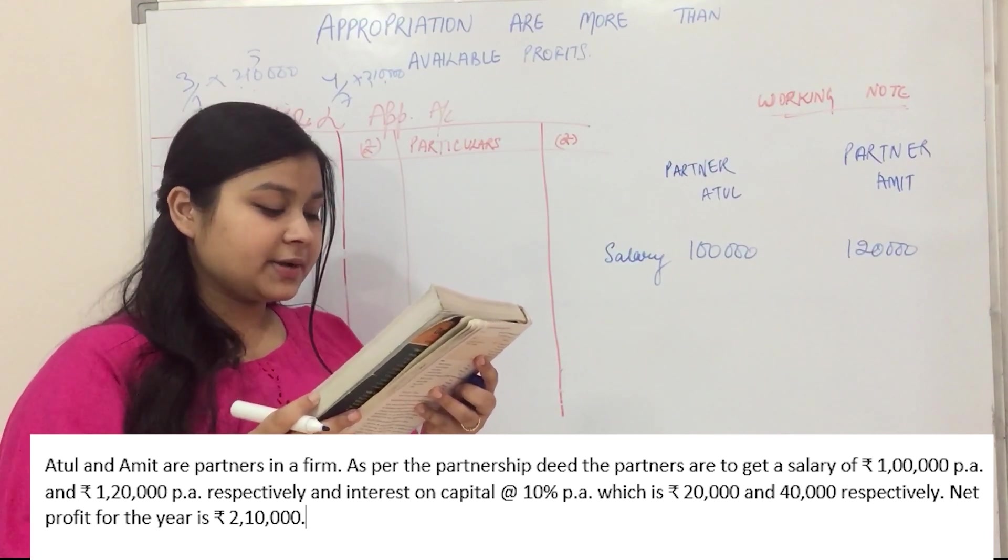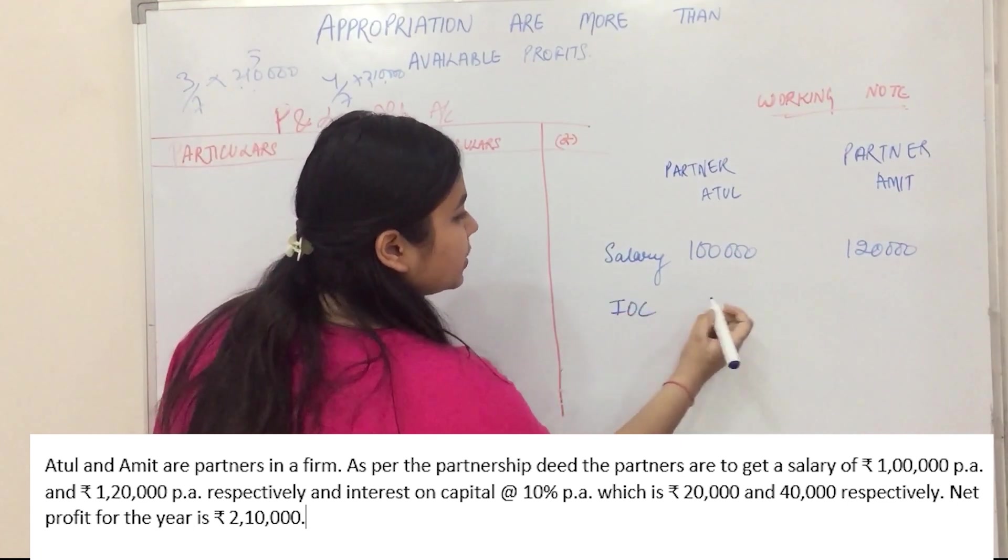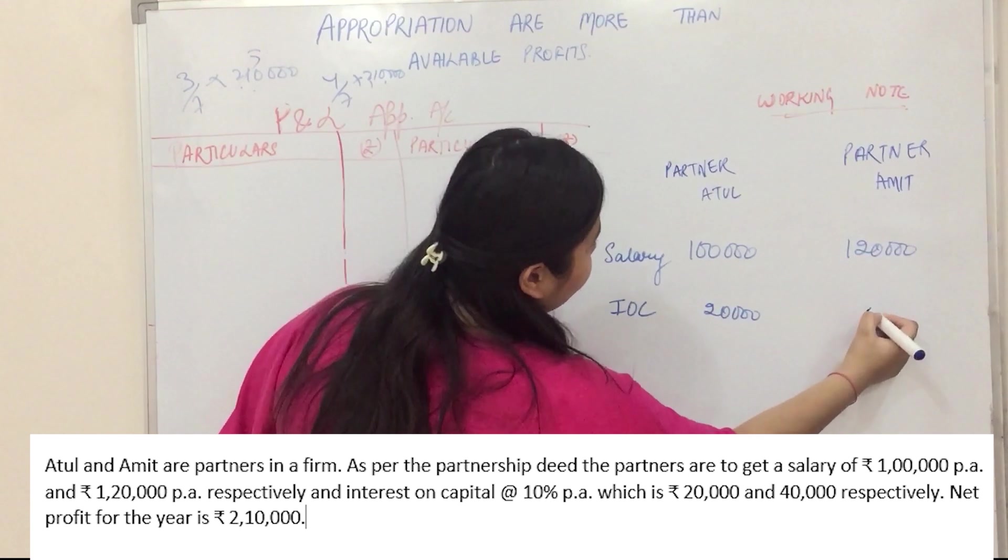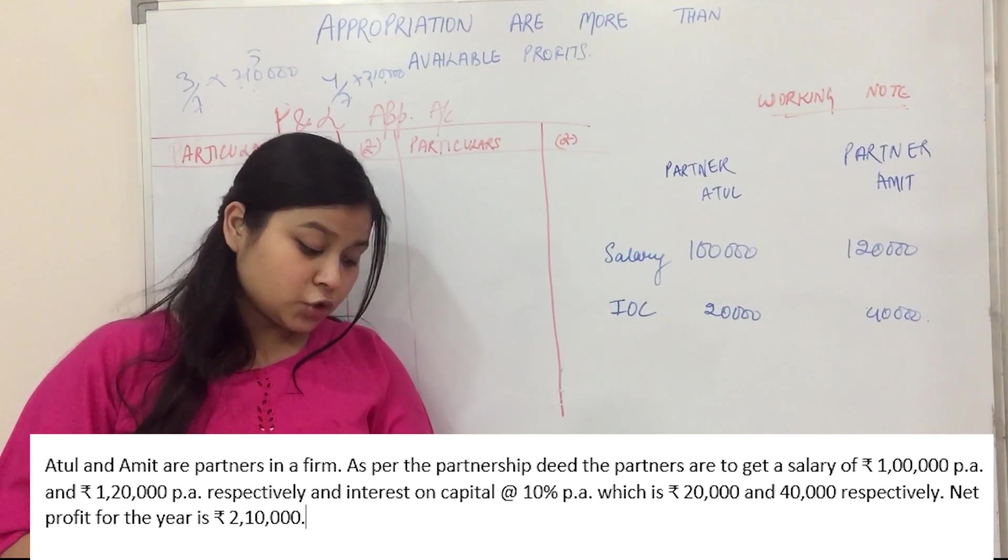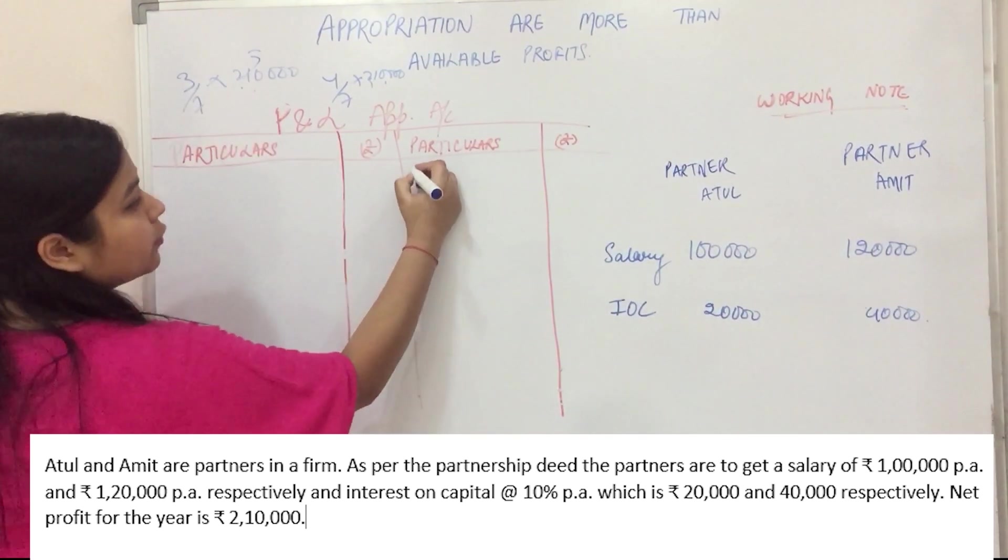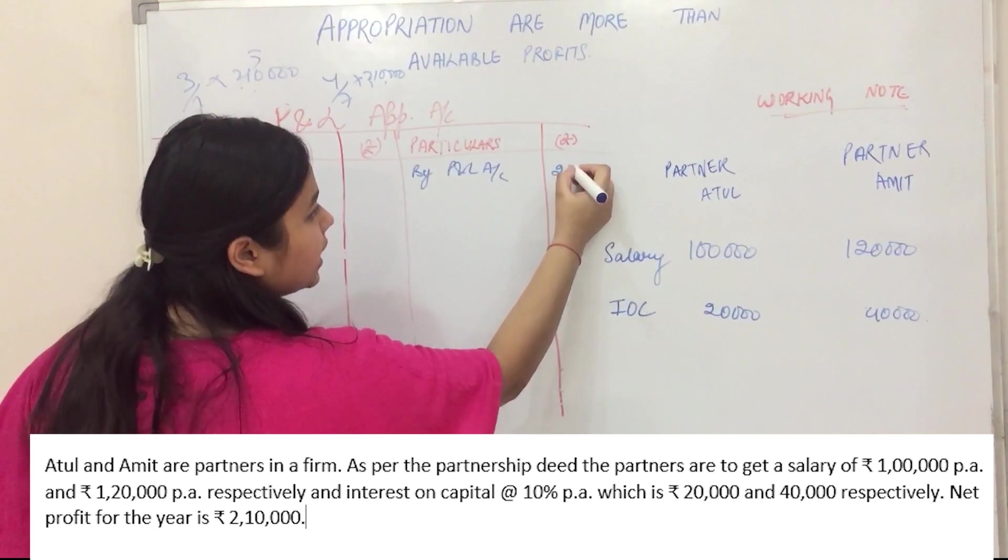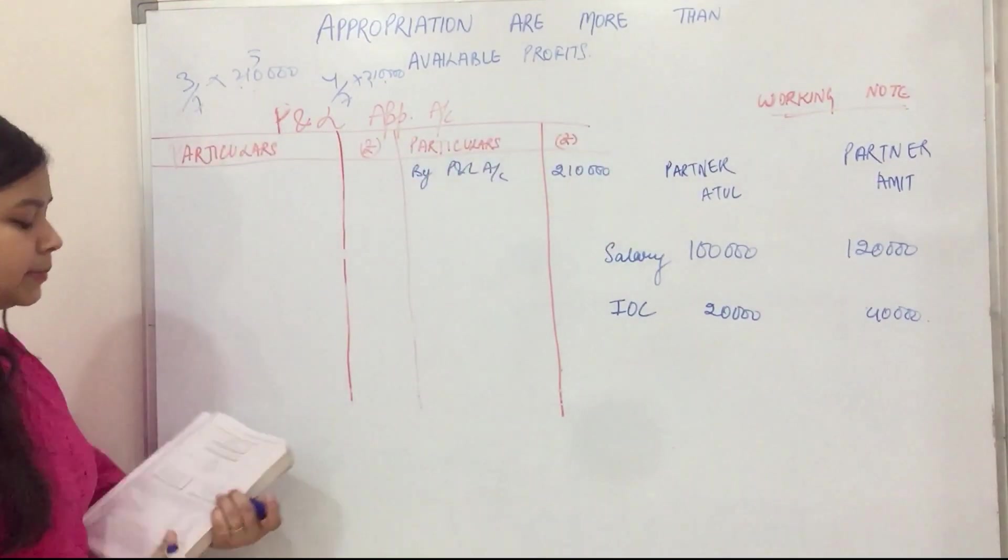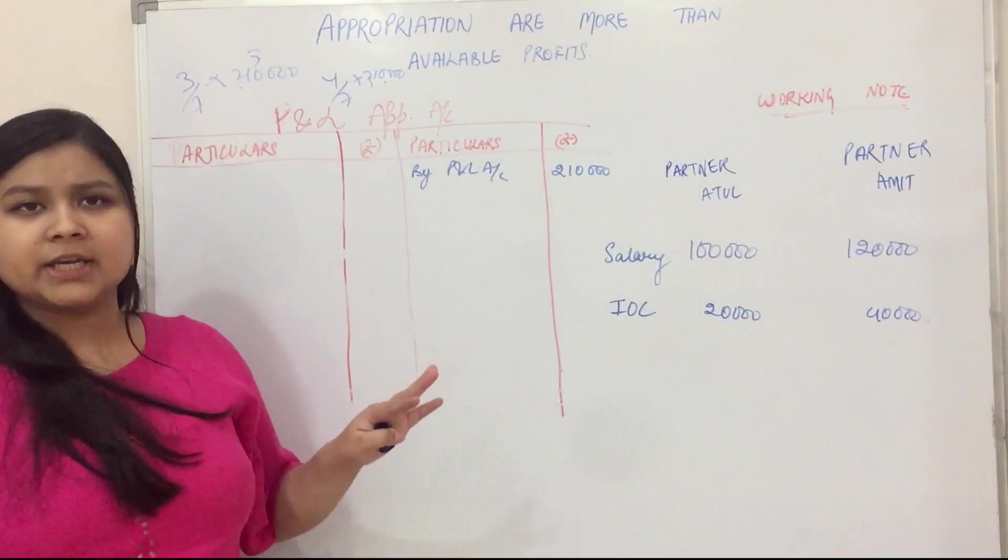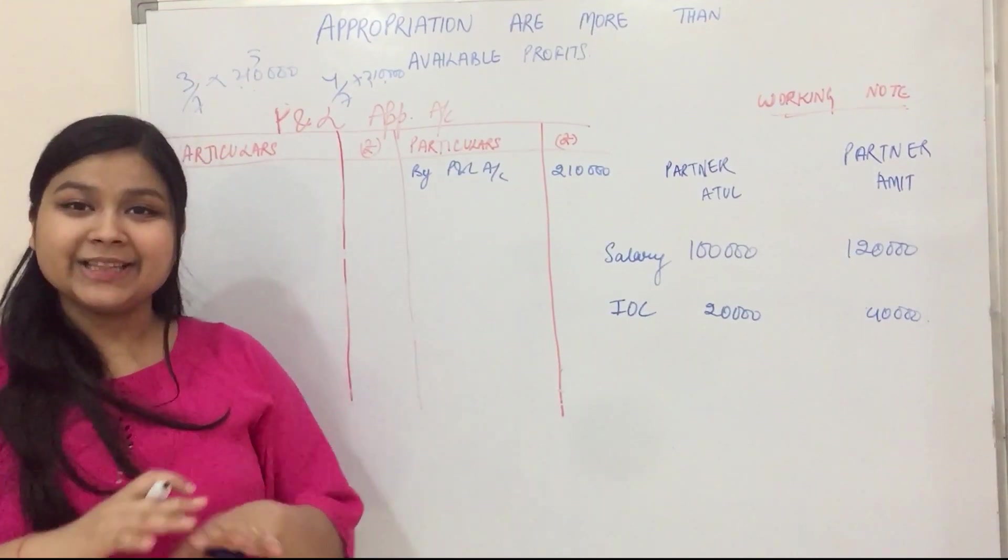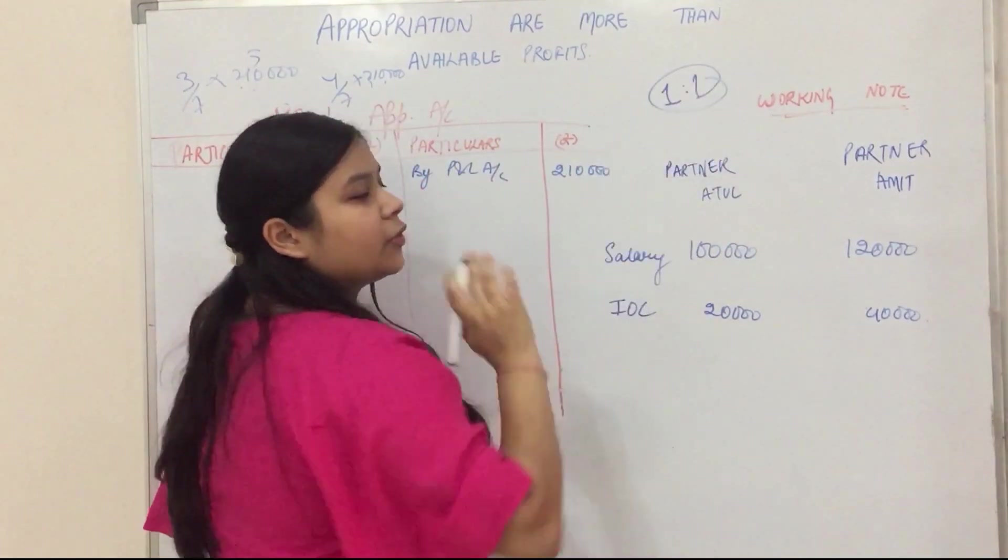And interest on capital at the rate of 10% which is 20,000 and 40,000. Net profit for the year is 2,10,000. Now we are talking about distribution. We have not given profit sharing ratio. When we have not given profit sharing ratio, then how much is it? 1 to 1. That is equal. This is our profit sharing ratio.